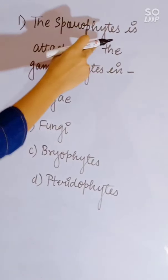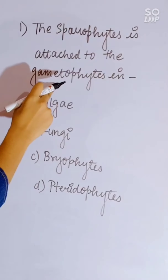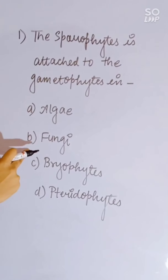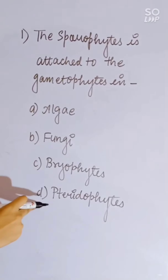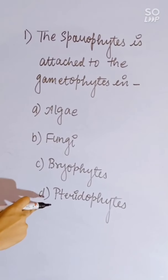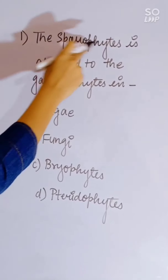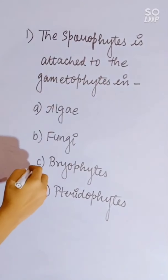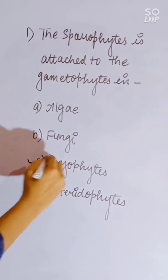The sporophyte is attached to the gametophyte in: algae, fungi, bryophytes, or pteridophytes. In bryophytes, the sporophyte is attached to the gametophyte. Correct answer is bryophytes.